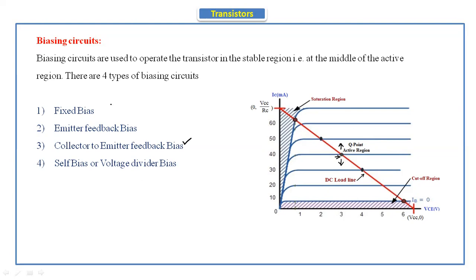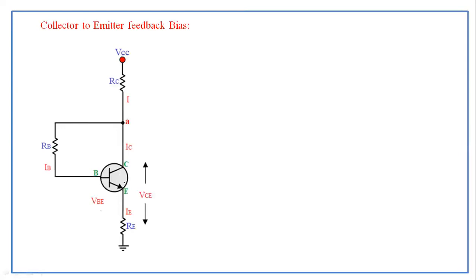We have already discussed the first two biasing circuits. Today we are going to discuss about the collector to emitter feedback bias. Now we will see whether by using this biasing circuit we will get a stable operating point or not.